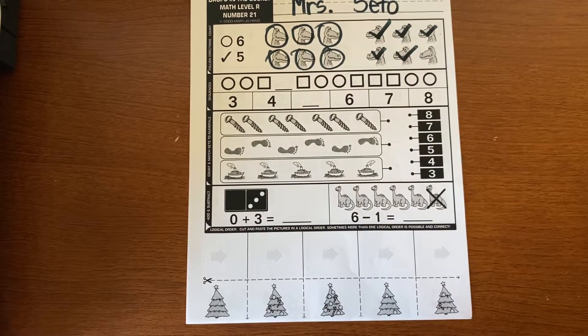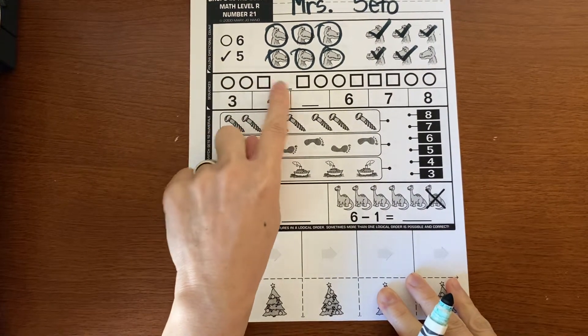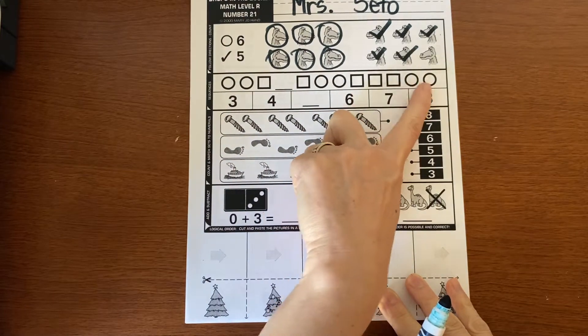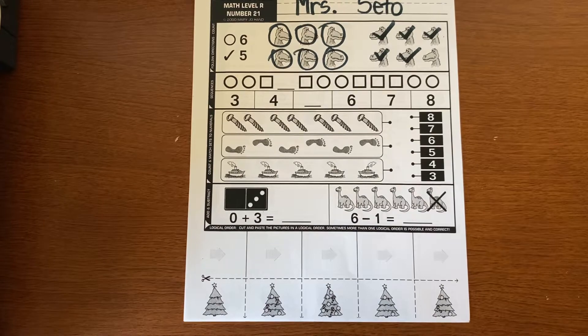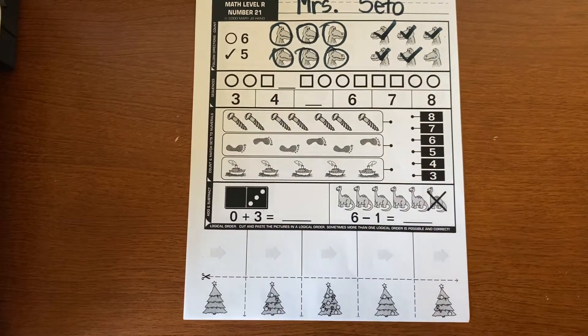Let's see if we can figure out the patterns. The patterns are getting harder, huh? Circle, circle, square, blank, square. Circle, circle, square, square, square, circle, circle. This is like the last one. We have to try to figure out what is missing between the two squares.